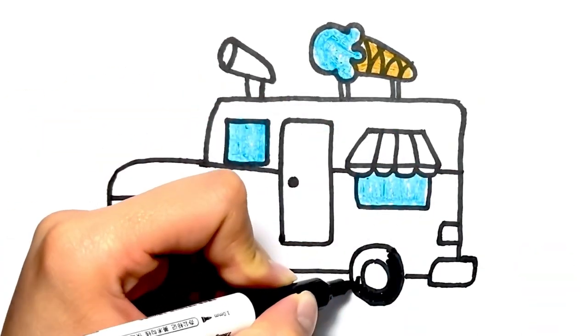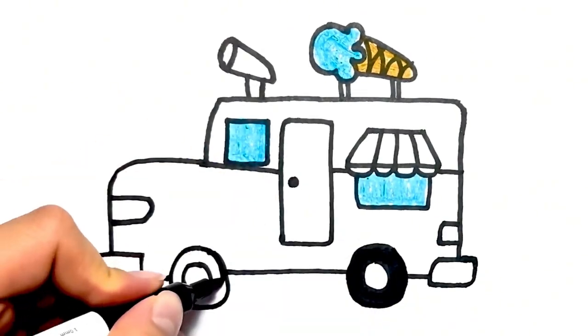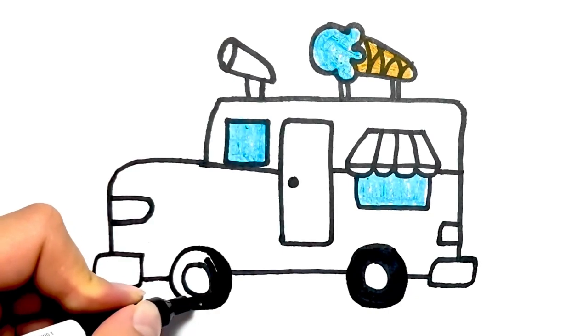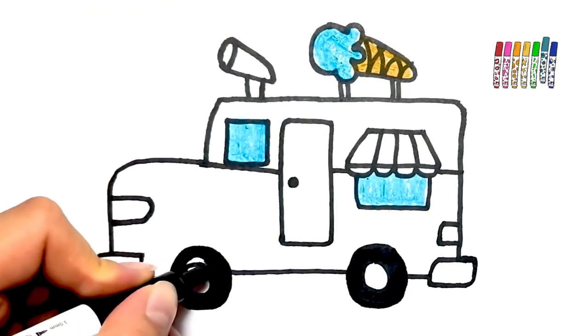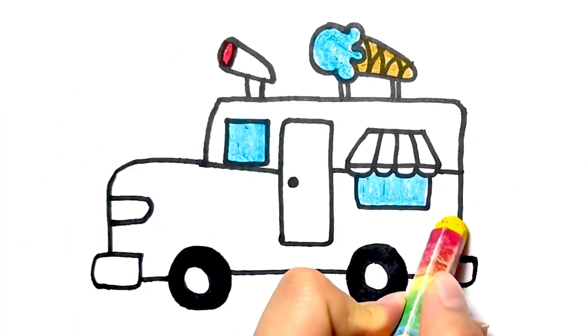Let's complete the wheels with black marker. I use crayons for coloring, but you can choose another coloring stuff, for example marker, watercolor, and stuff like that. Yellow color.